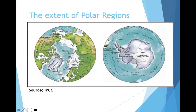The extent of polar regions can be seen here. The Arctic region includes the surrounding land area — the continents, Greenland, North America, and parts of Europe and Russia. The Antarctic, the southern polar region, encompasses the western and eastern parts of Antarctica and all surrounding oceans — that is the Southern Ocean.